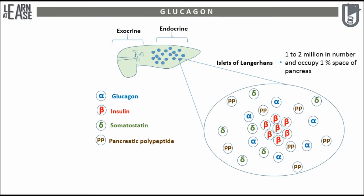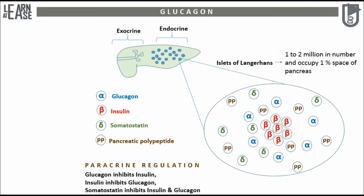These cells interact with one another in a paracrine fashion. That is, when activated beta cells release insulin, they will inhibit alpha cells from secreting glucagon. In the same way, glucagon secretion will inhibit beta cells from secreting insulin, and secretion of somatostatin will inhibit the release of both insulin and glucagon.